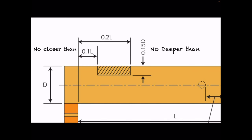You're not allowed to cut your notch any deeper than 0.15 of the depth. This is all to make sure you do not weaken the joist.